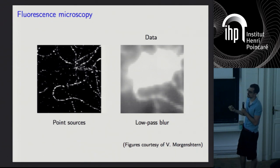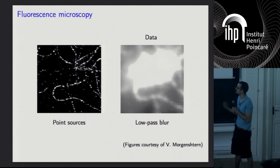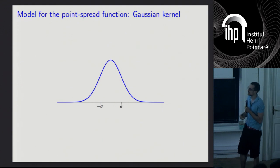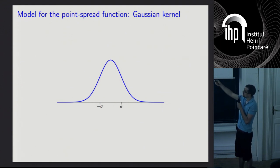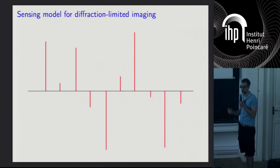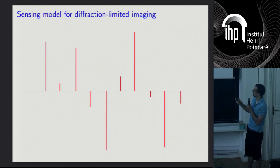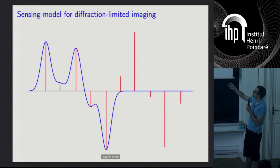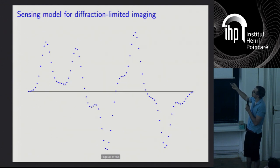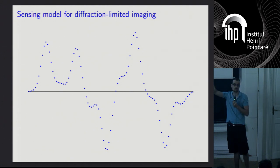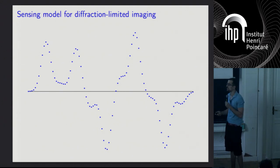The people that came up with fluorescence microscopy were awarded the Nobel Prize in chemistry a few years ago. Now let's look at a simplified mathematical model. We'll model the convolution kernel as a Gaussian, and the point sources are like spikes with arbitrary amplitudes. These point sources get convolved with the convolution kernel, and then we get to see samples. The problem is the same: we have these samples and want to recover the original spikes in a tractable way.